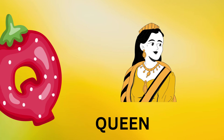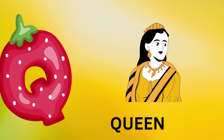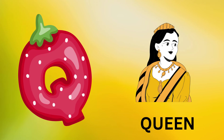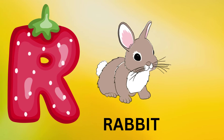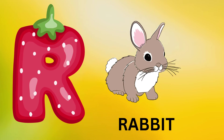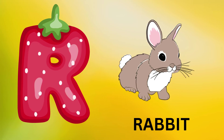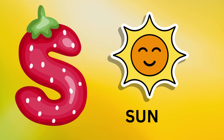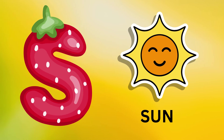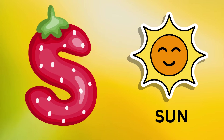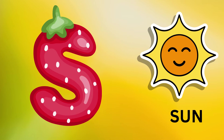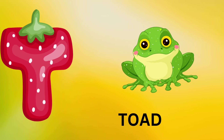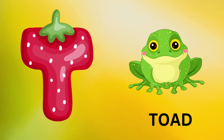Q is for queen, k-k-queen. R is for rabbit, r-r-rabbit. S is for sun, s-s-sun. T is for toad, t-t-toad.